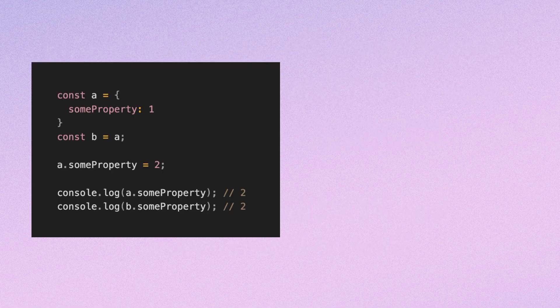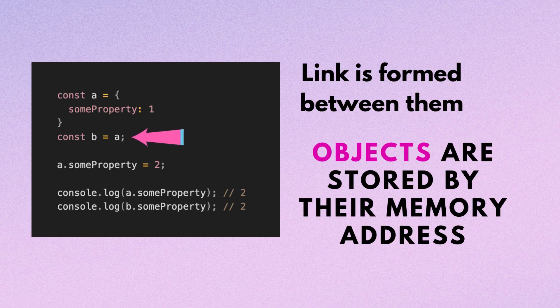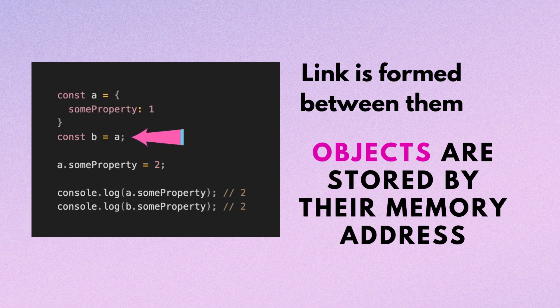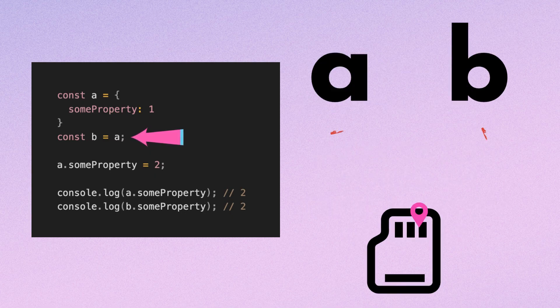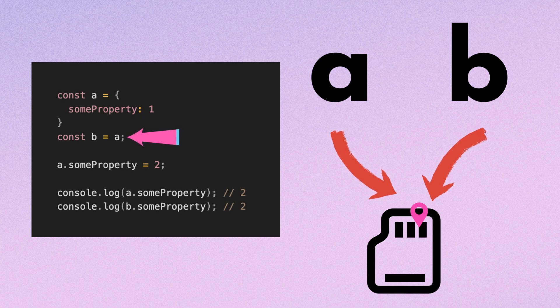In this example, after assigning variable a to variable b, a link is formed between them. This is because objects are stored by their memory address. Both a and b point to the same memory location. Therefore, when we modify this object, the changes reflect in both variables.